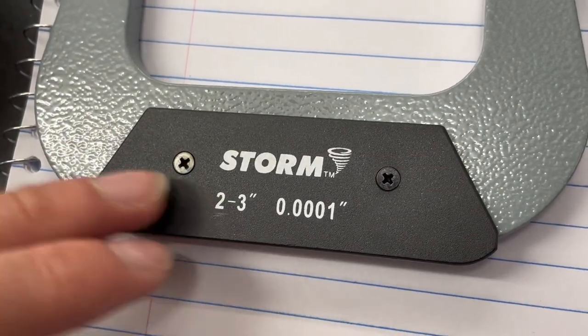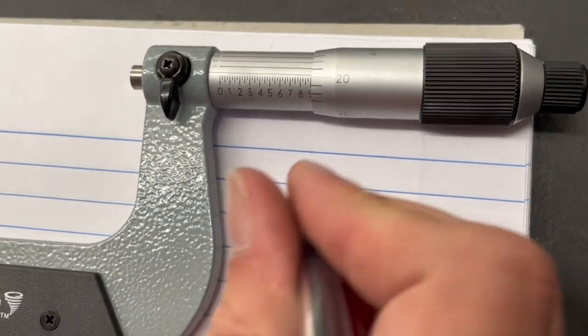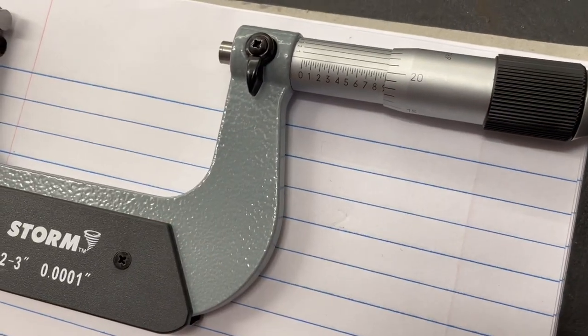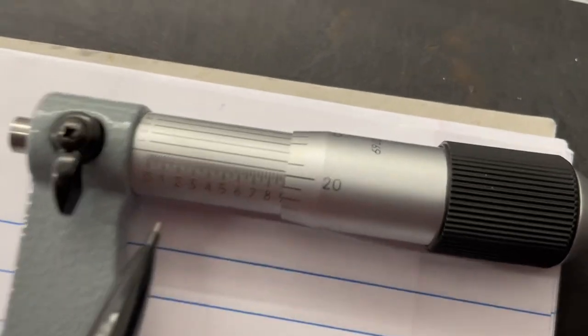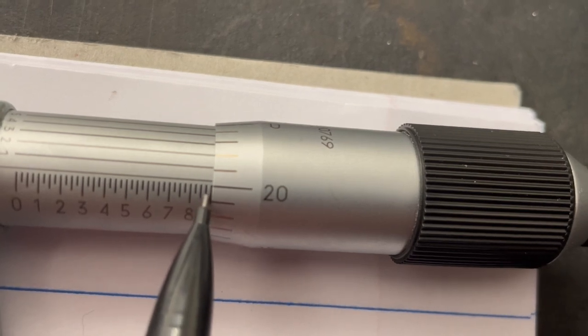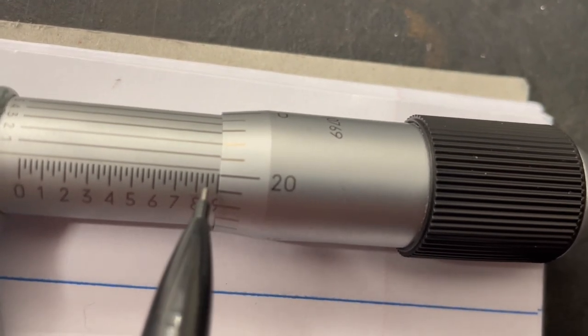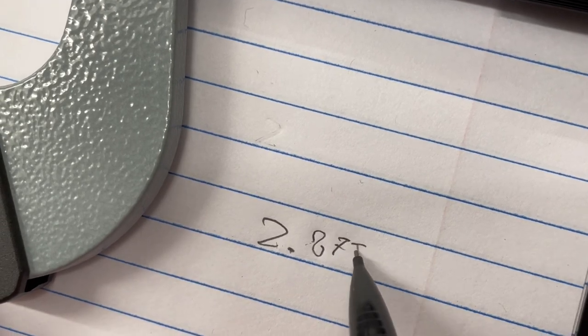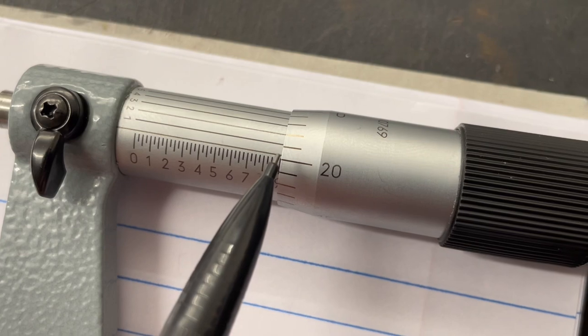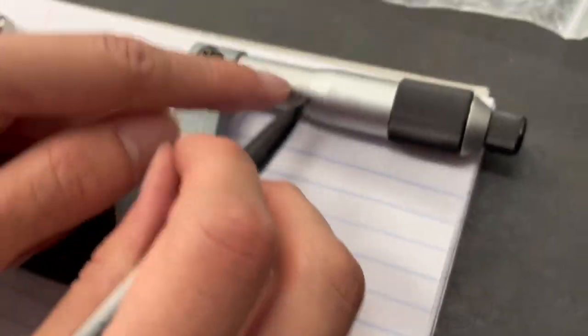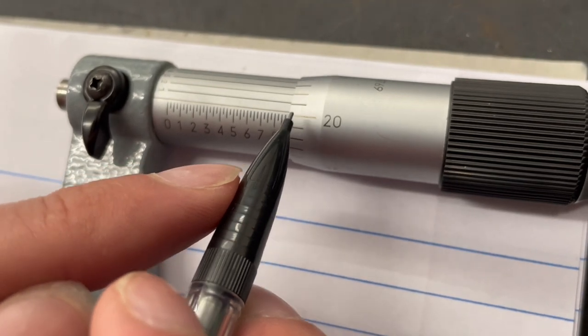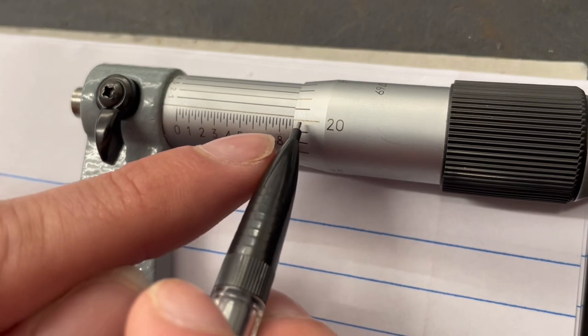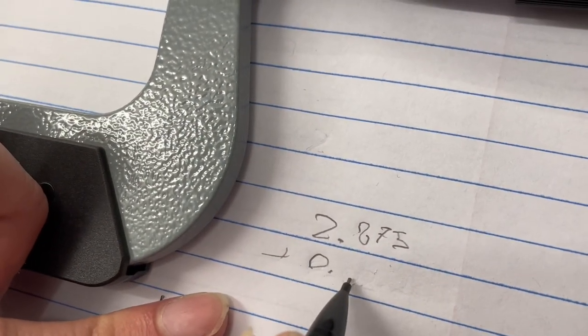So because this is a two to three inch micrometer, three at the maximum, we're going to write down two point. Then we look right here. You're always going to round to the lowest. So nine is not clearly visible. So we're going to go with eight, say 0.875. Now right here we round to the lowest again. So the thimble indicates we're always going to go to the lowest. So this one is higher. This one's the lower one because it's lower than our main line. So we're going to go with 20.